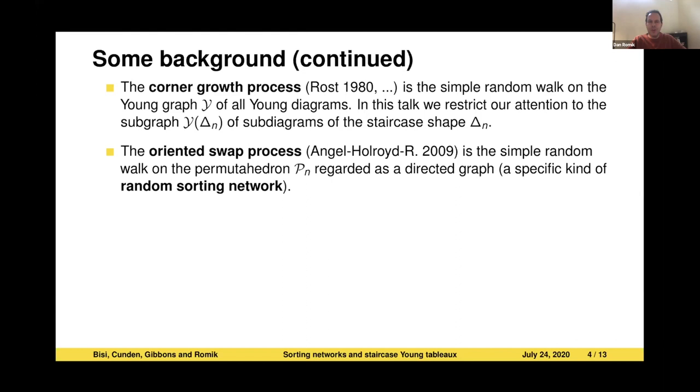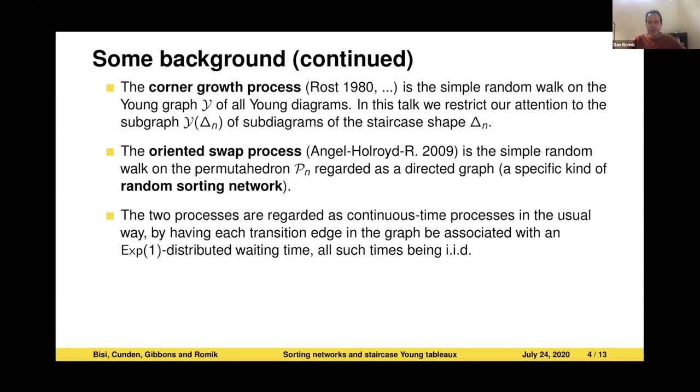To emphasize, I consider these two processes as continuous time processes. The standard way of doing this is that each edge of the graph is labeled or associated with a random waiting time, which is an exponentially distributed waiting time with rate one. All of those times are IID, independent of each other. Whenever you're at a vertex of the graph, you look for the outgoing edge that has the smallest waiting time, and you traverse that edge. You keep track of how long that took you. That adds the time parameterization.